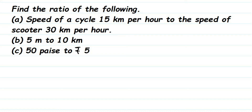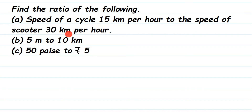Here is a question on ratios. Find the ratio of the following: the first one is speed of a cycle 15 kilometers per hour to the speed of a scooter 30 kilometers per hour. The second is 5 meters to 10 kilometers, and the third one is 50 paise to 5 rupees.